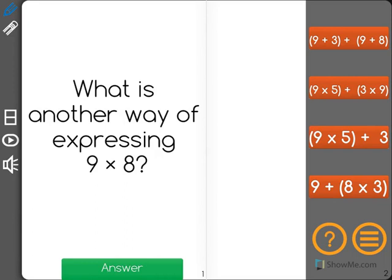The first one says 9 plus 3 plus 9 plus 8. I know 9 plus 3 is 12, and 9 plus 8 is 17. 12 plus 17 is 29. That's not 9 times 8.